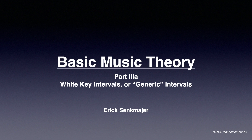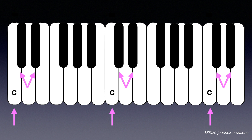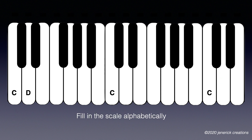Hello, this is Basic Music Theory Part 3A: White Key Intervals or Generic Intervals, Ascending. We look again at the keyboard, find the pairs of black keys, look down to the left — that's the note C — and then we just fill in the rest of the keyboard.